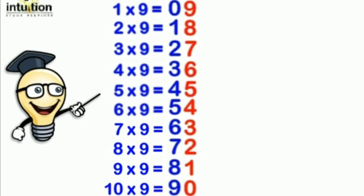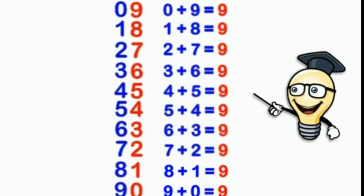One thing to remember while writing the table of 9 is that you can also check whether you have done it correctly. If you add the two digits of each product in the table of 9, the sum will always be 9. Like 0 plus 9 equals 9, 1 plus 8 equals 9, 2 plus 7 equals 9, 3 plus 6 equals 9, and in the last 9 plus 0 is 9. So the sum of digits in the table of 9 always comes out to be 9. I think the method of writing the table of 9 is clear to you.